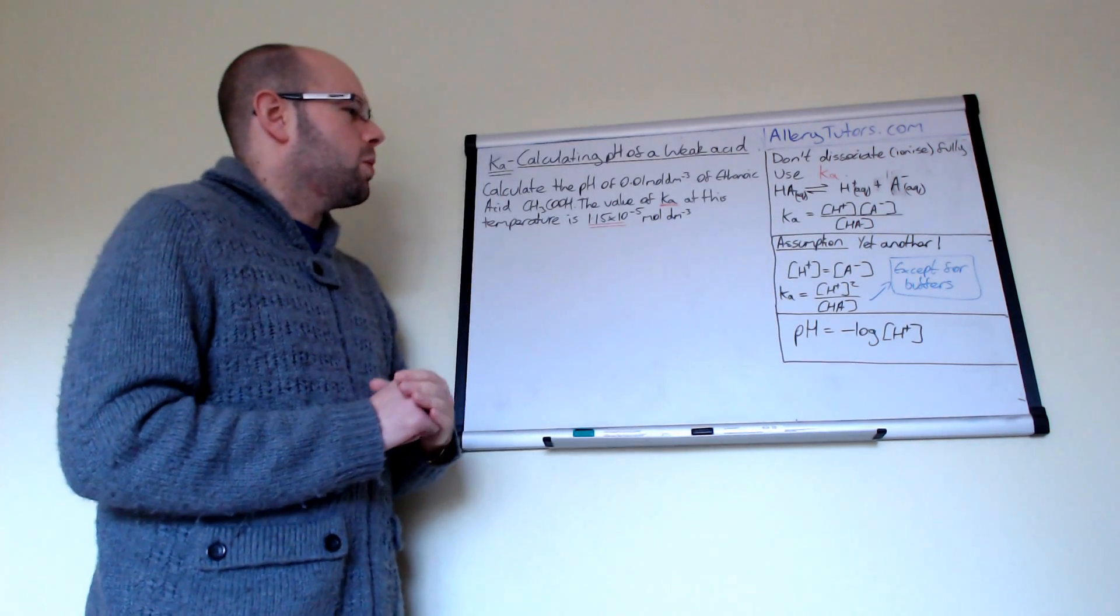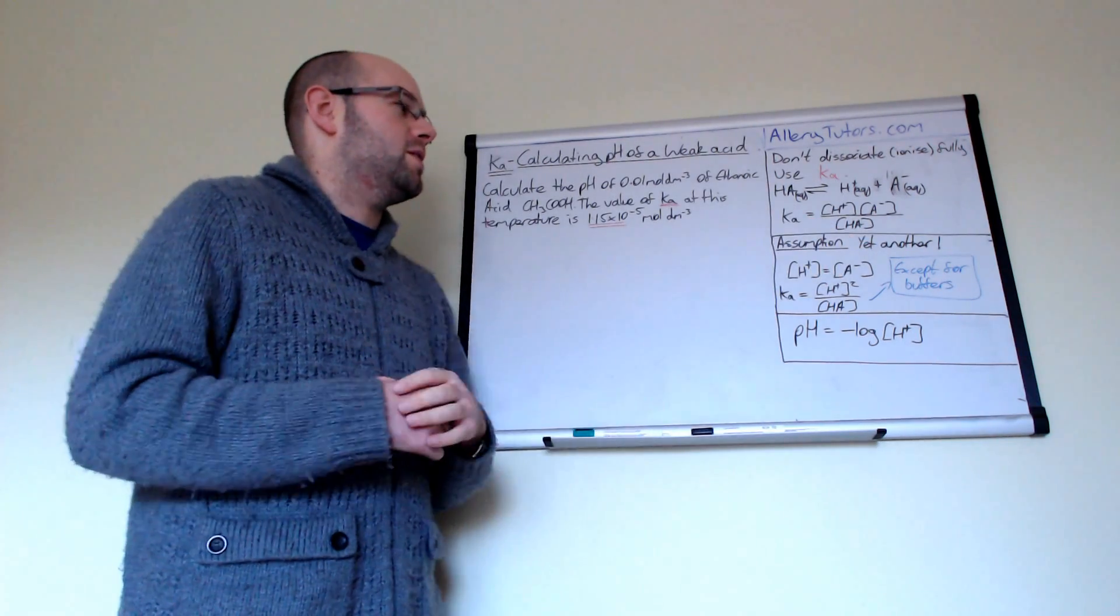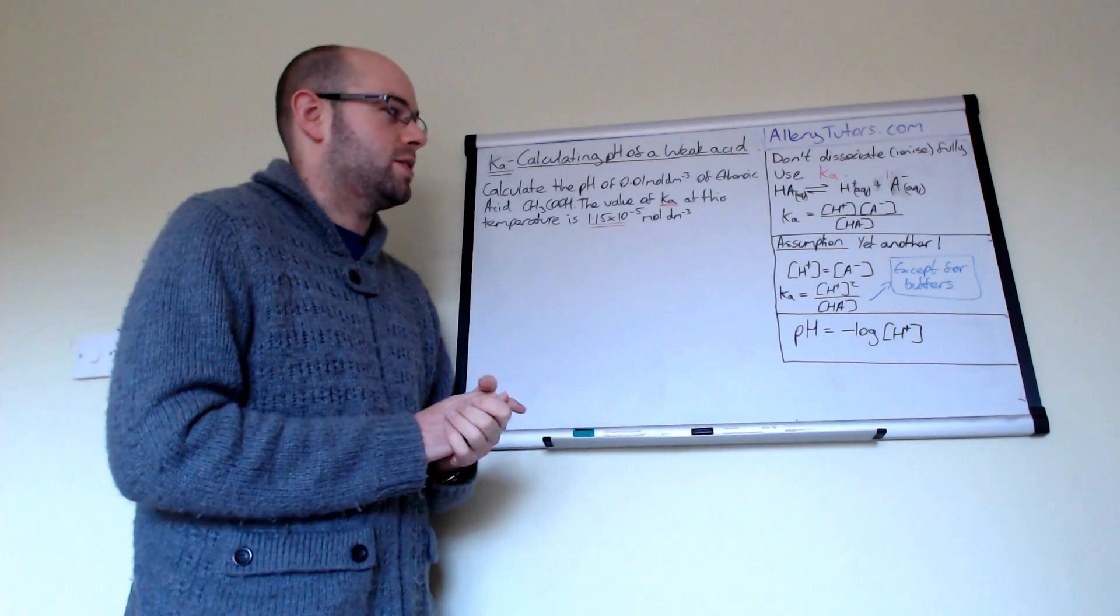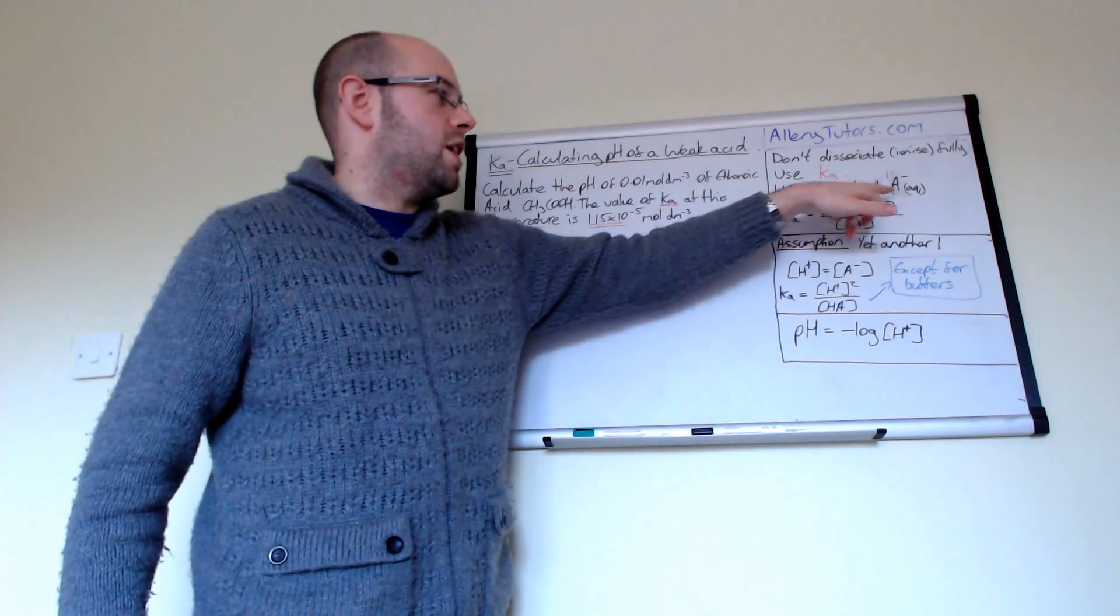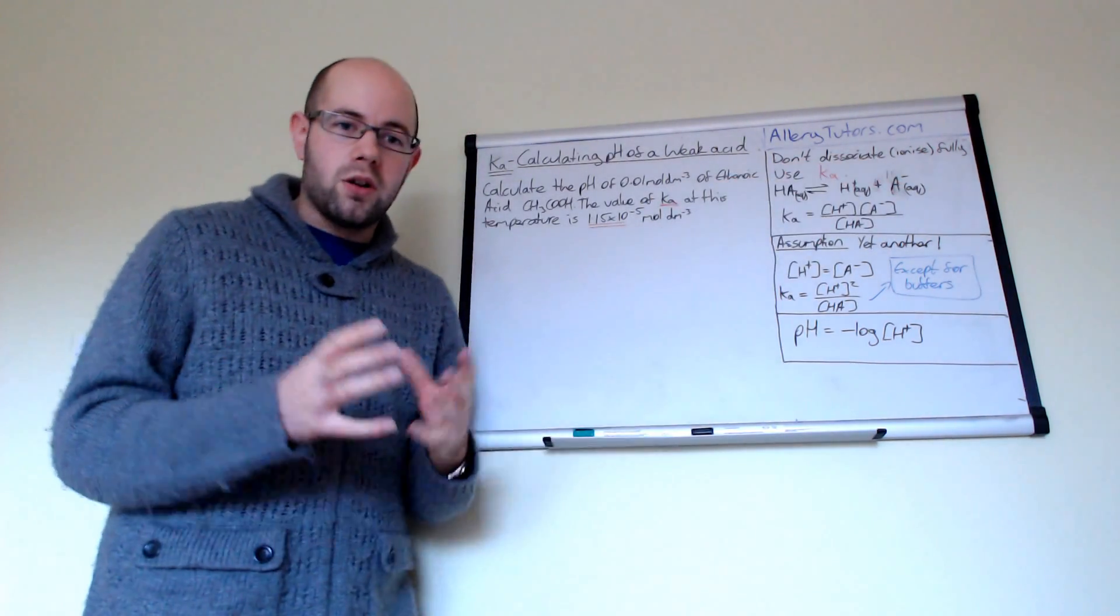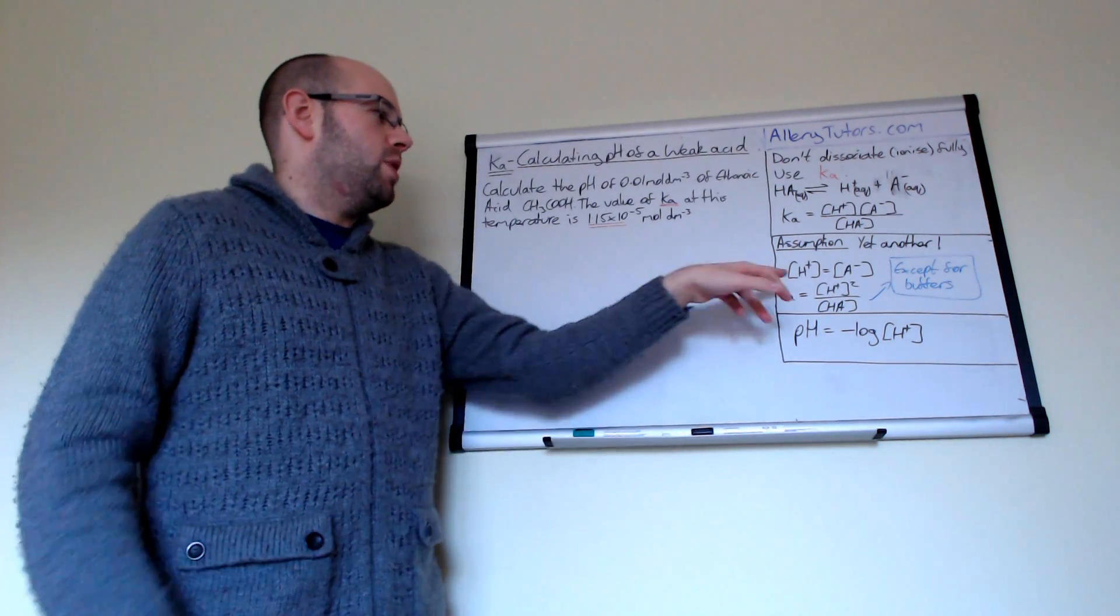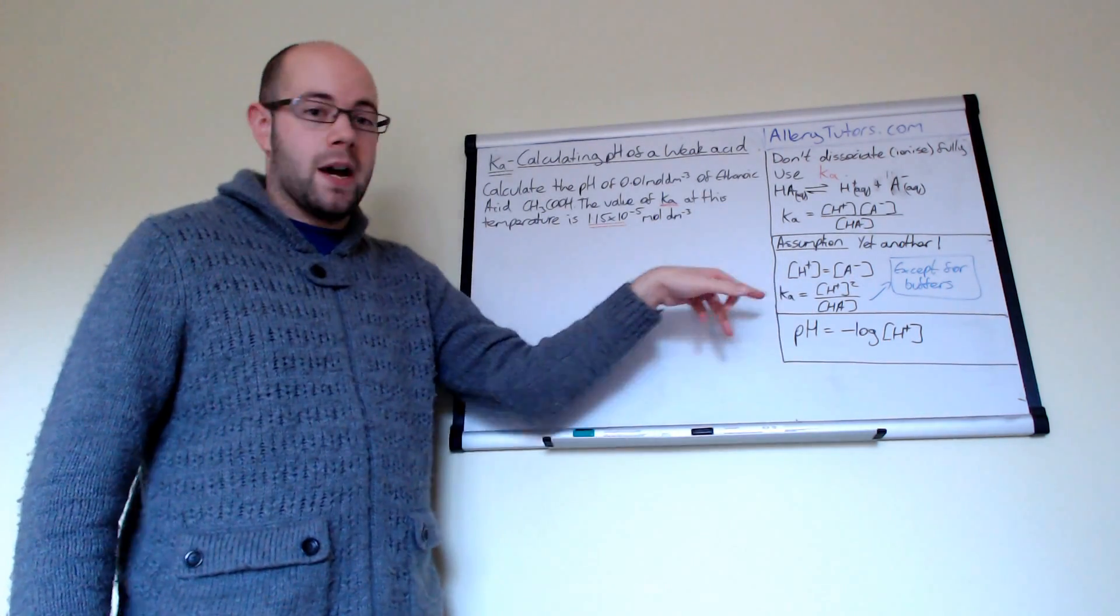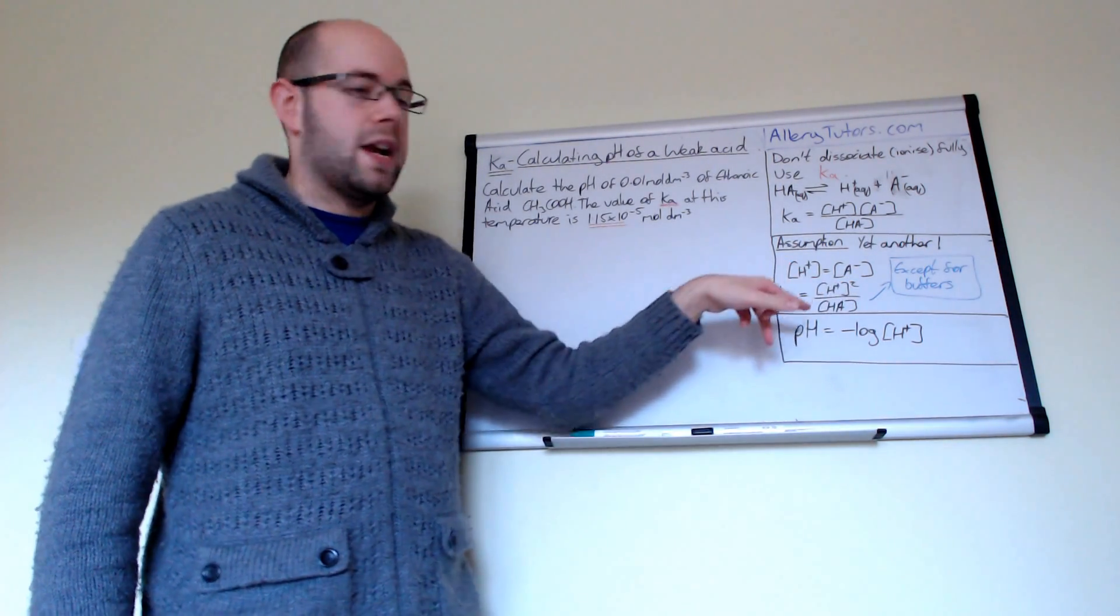Now what we have to do is we have to actually make an assumption here, and here's the box here that highlights the assumption. We can say that when HA dissociates to produce H plus and A minus, that actually the concentrations of these are going to be the same, they're equal. And because they're equal, then we can say that actually we can rewrite out our Ka expression and write it out as Ka equals H plus squared over HA.